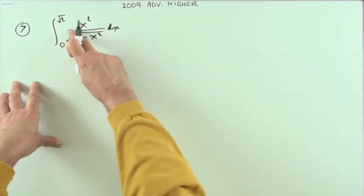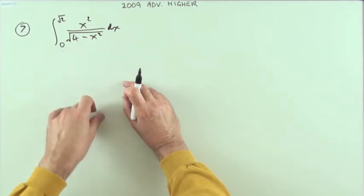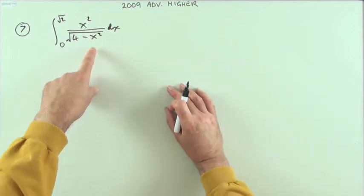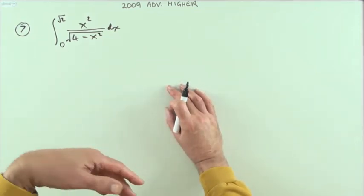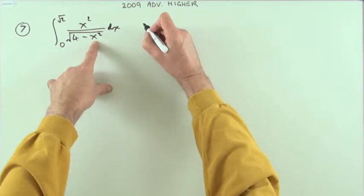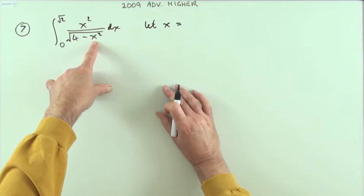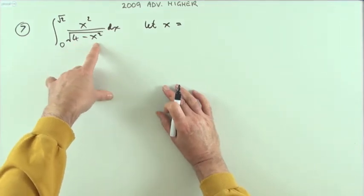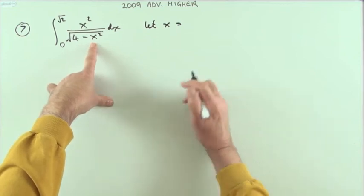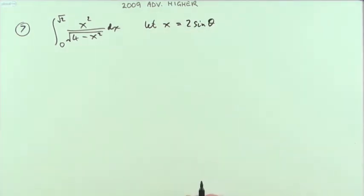Whenever you've got the square root of something minus x squared, you could think of trigonometric substitutions, because one minus sin squared makes cos squared. So it'd be handy if that was sin squared — it'd become cos squared and the square root would just be cos. Four minus sin squared would be no use; I'd want four minus four sin squared, so x equals two sin theta.